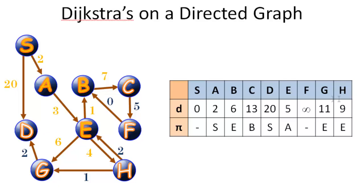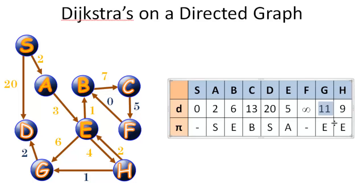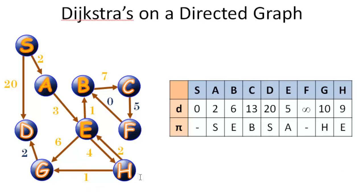Next, H is our nearest unvisited vertex, so let's visit vertex H. H has two outbound edges: HE with weight two and HG with weight one. We visit HE first — we can already reach E in five, and reaching H costs nine, so going through H would cost eleven to reach E; that doesn't benefit us. Then for HG: reaching H in nine plus one gives us G in ten, which is better than eleven, so we update G's distance to ten and G's predecessor to H. We mark vertex H as complete.